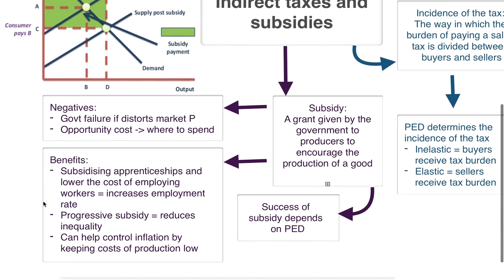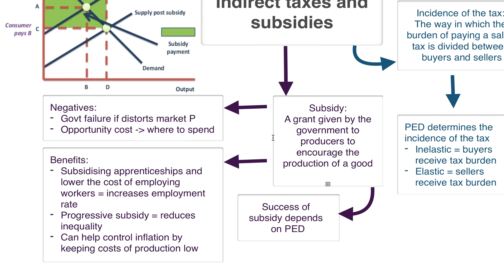Subsidies are very good because they can increase the employment rate by making workers more skilled through apprenticeship schemes and lowering the cost of employing workers. From a macroeconomic view, increasing employment is going to have a positive multiplier effect. However, if you're writing about that in your microeconomics exam, it's important not to go too much into the positive multiplier effect, because that is a macroeconomic point and might actually hinder your grade.